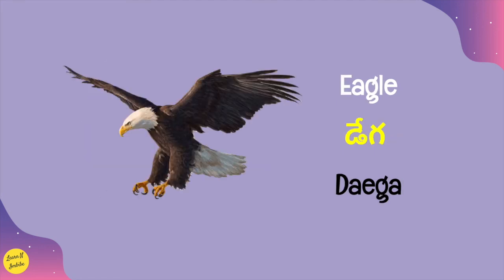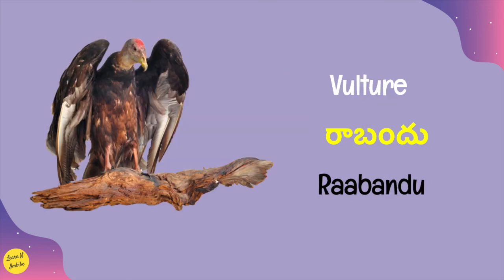Eagle is known by the name 'dega' — B-A-E-G-A — dega. Moving on to the last bird in our video: vulture in Telugu is known by the name 'raabandu' — R-A-A-B-A-N-D-U — raabandu.